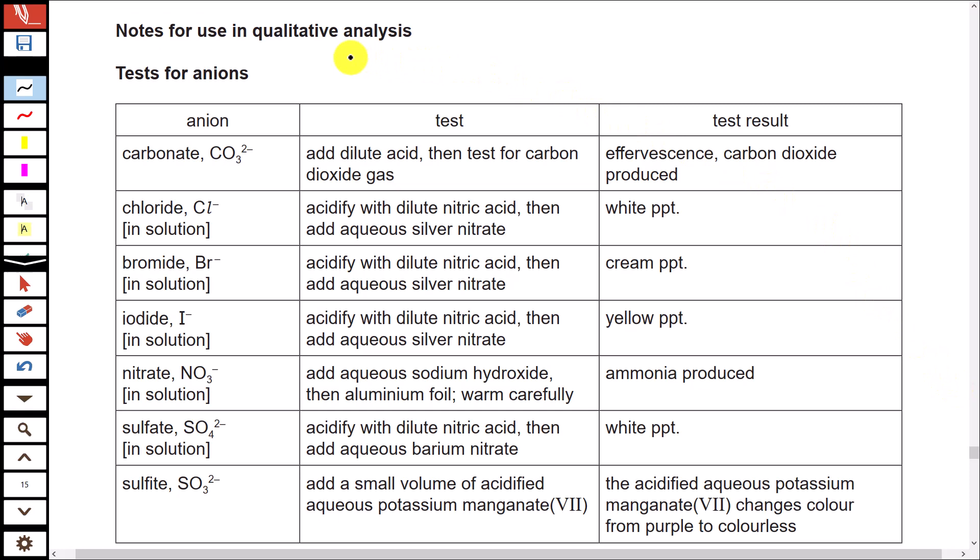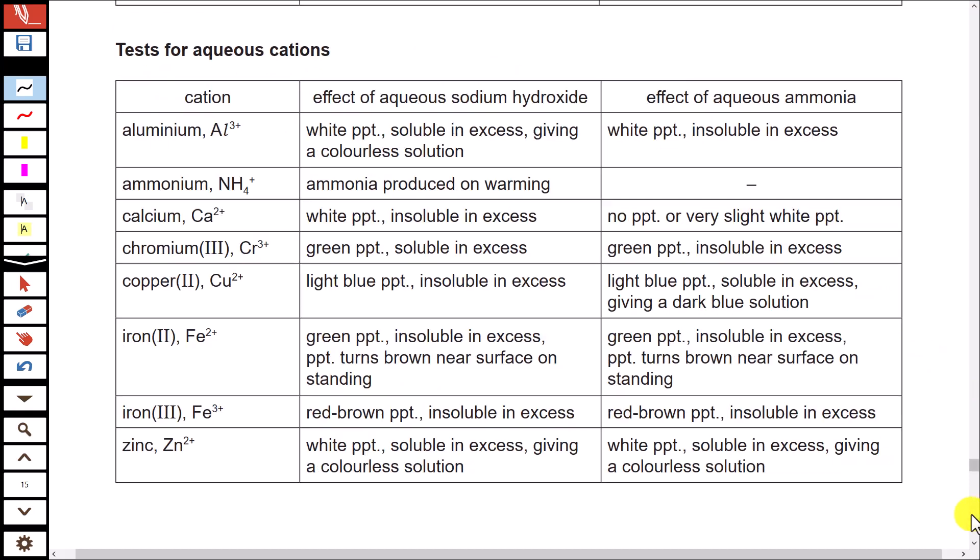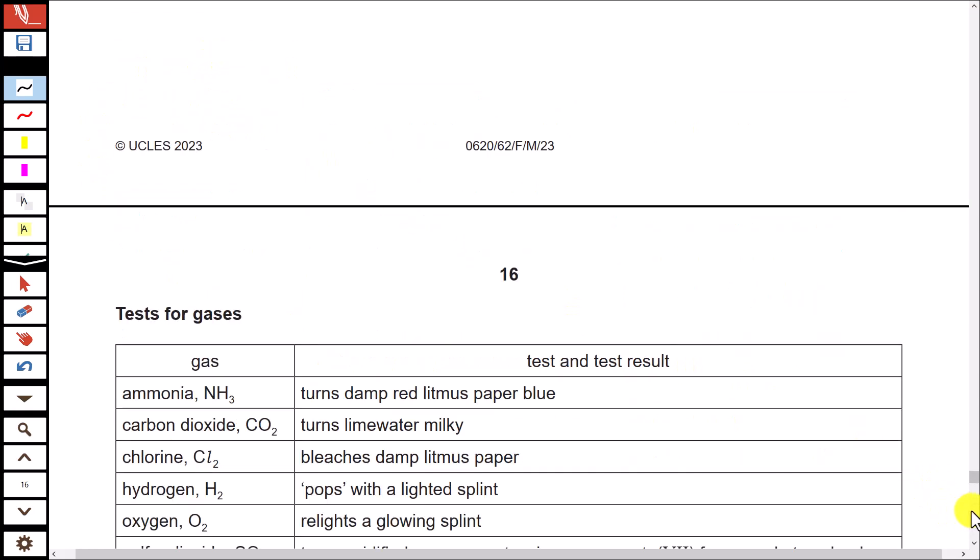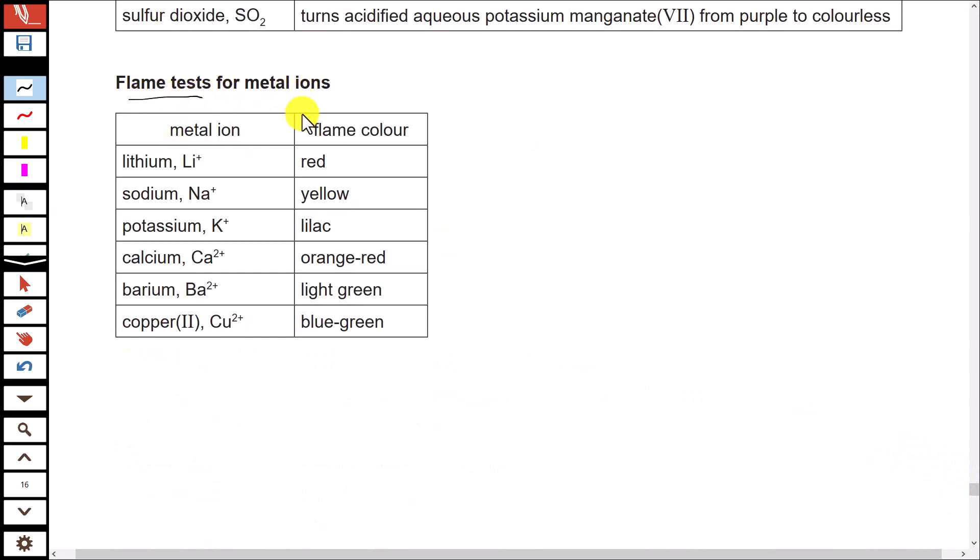Here it is. This is a table: tests for anions, then you have tests for aqueous cations and tests for gases, and also the flame tests for metal ions. So everything that you need to solve this question number three is given in the table. All you need to do is pick up the right test and then you have to respond accordingly.